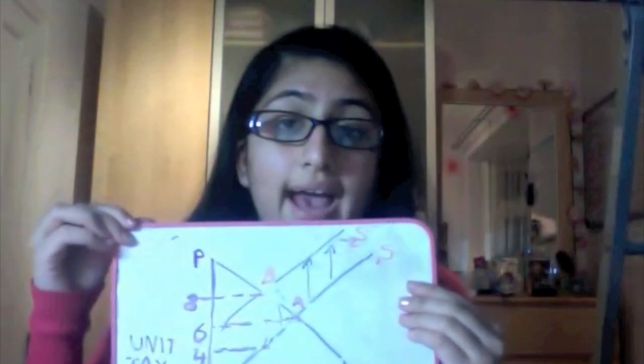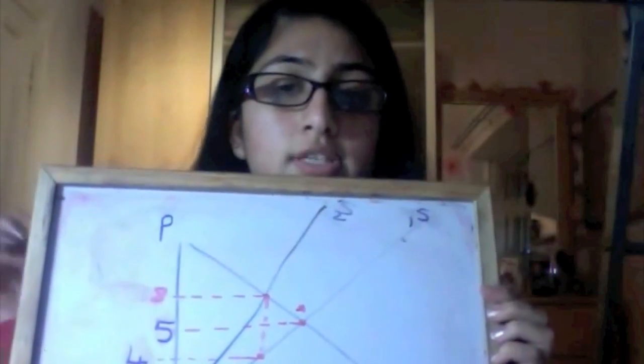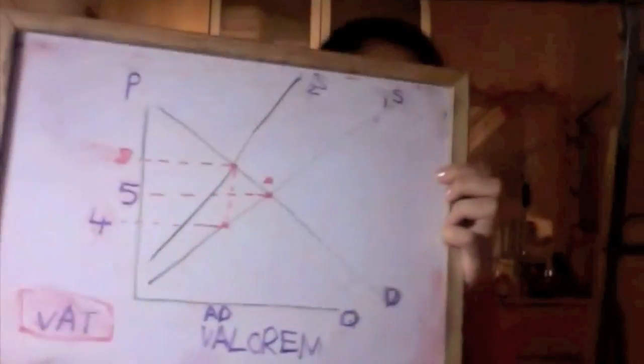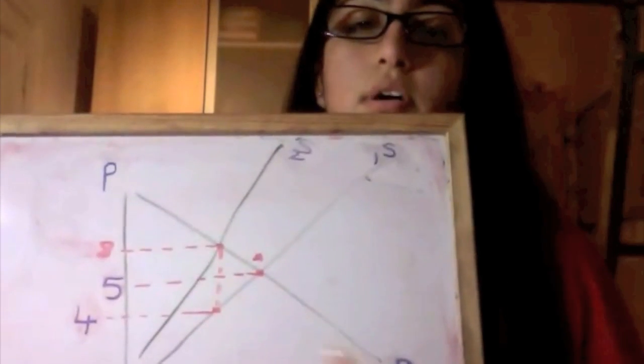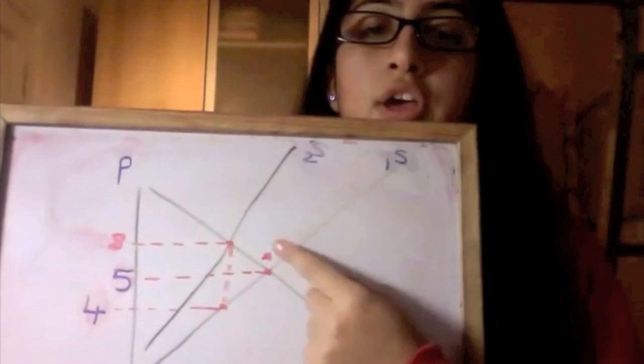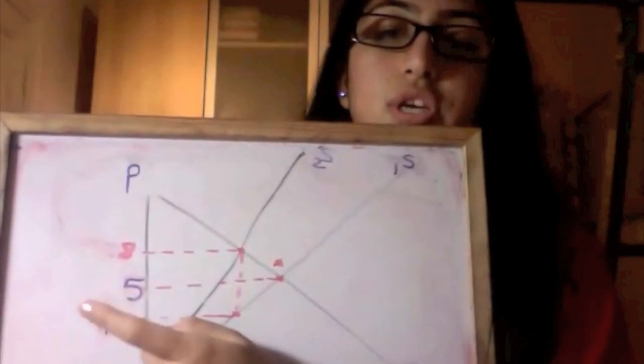So now let's quickly have a look at ad valorem taxes like VAT. So ad valorem tax looks slightly different because you have quantity, price, again you have demand and you have supply. You have equilibrium A, where over here the expenditure is £5.